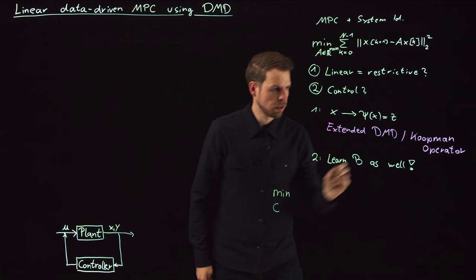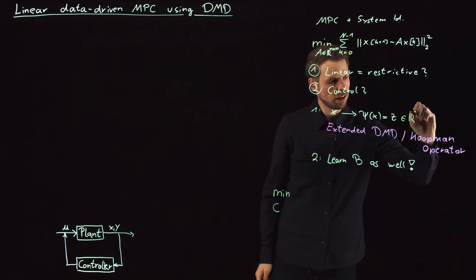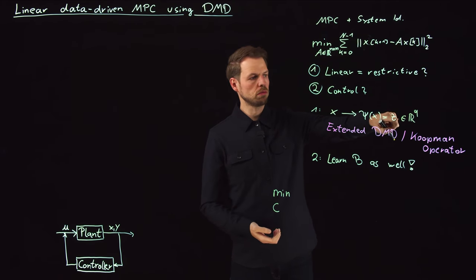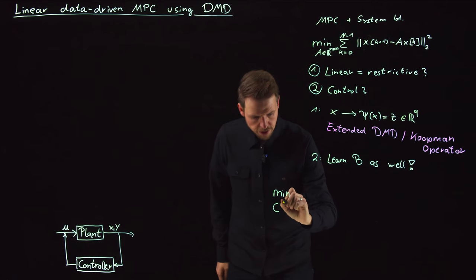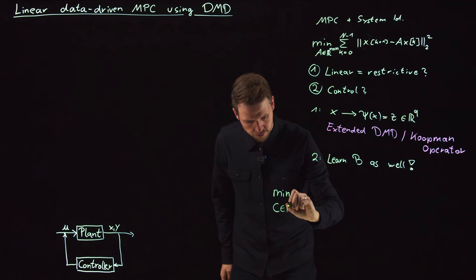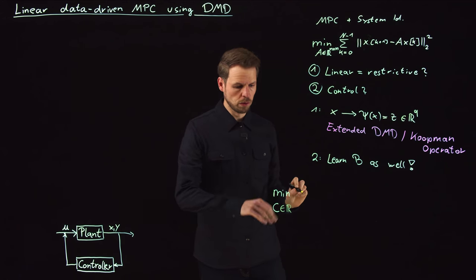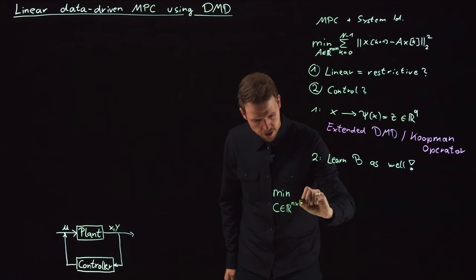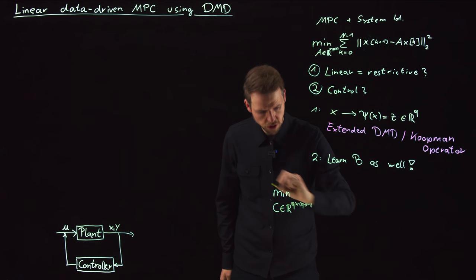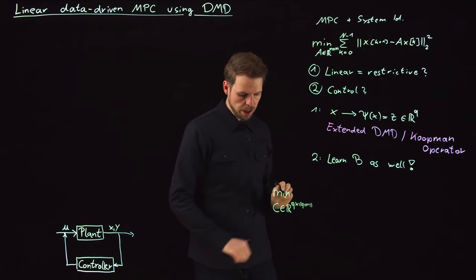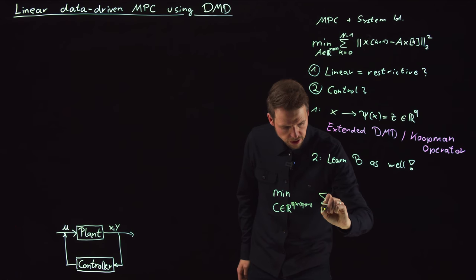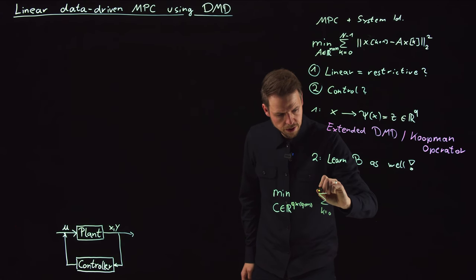So what I'm going to do now is I'm going to rewrite this problem in a way that we hopefully address both problems. So what I'm going to do is I'm going to minimize over a matrix C. So let's define what this is. So let's say we have a Q dimensional state. Now we have changed it from N dimension to Q, usually a larger dimension. And the C matrix is going to be a Q by Q plus M, where M is the control dimensional matrix. And what we are minimizing is a similar least squares loss function, K equals 0 till N minus 1.